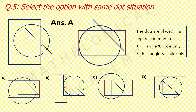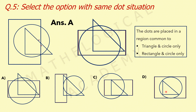In option B, we have a region common to triangle and circle only. In option C, we don't have a region common to circle and triangle only, so this is not an option. In option D, there is no region common to circle and triangle only because that region also lies in the rectangle. So our answer is option A.